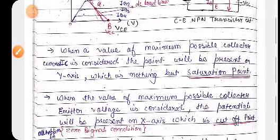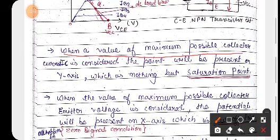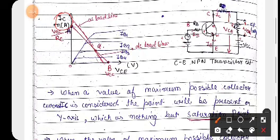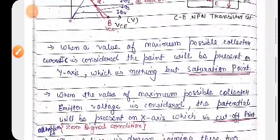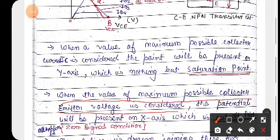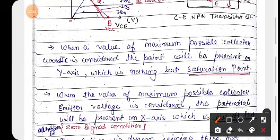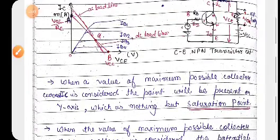When the value of maximum possible collector current is considered, the point will be present on the Y-axis, which is nothing but the saturation point. When we consider maximum IC — collector current — on the Y-axis, this point will be the saturation point. When the value of maximum possible collector-emitter voltage is considered, this point will be present on the X-axis, which is known as the cutoff point — this is the zero signal condition. So this is the cutoff point and this is the saturation point.